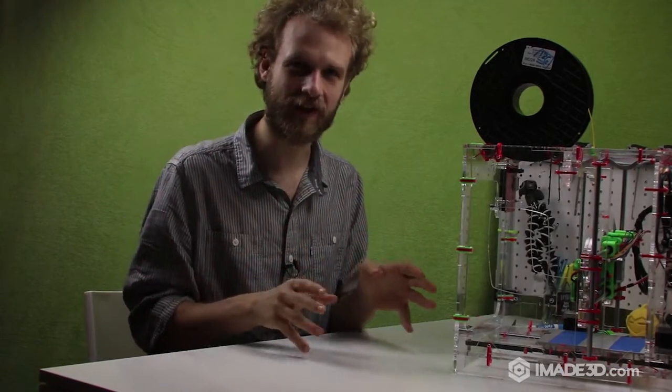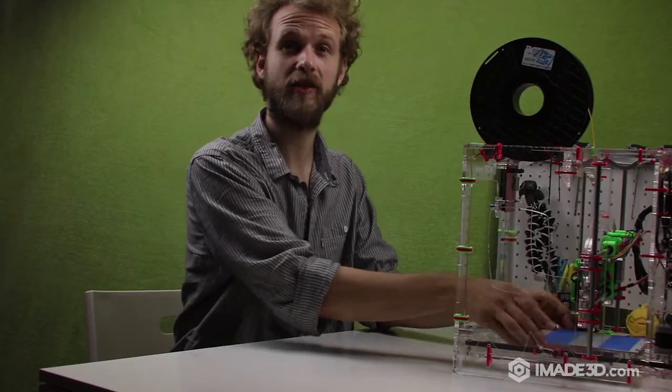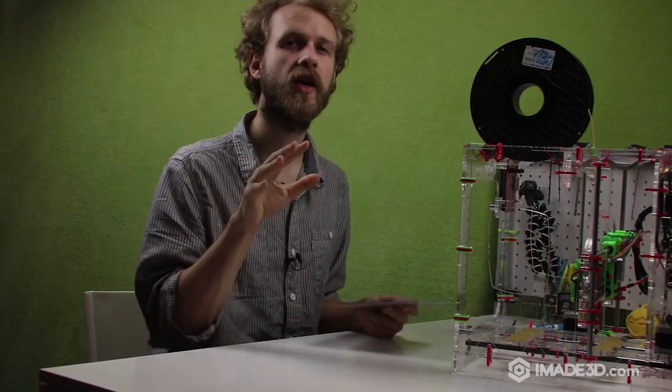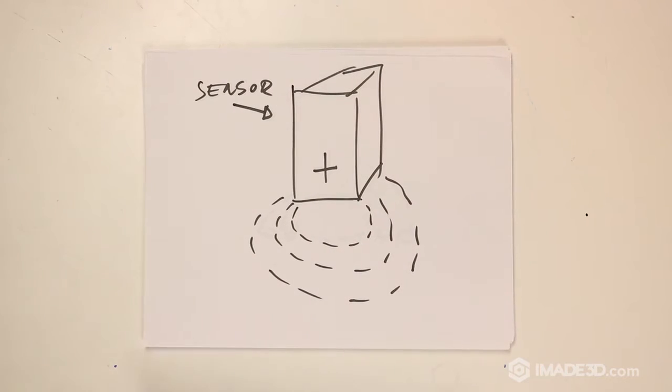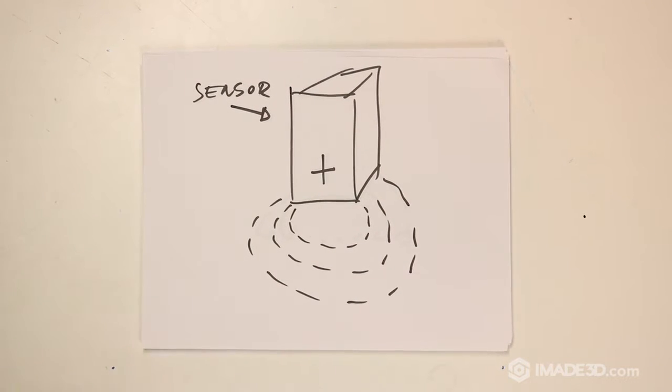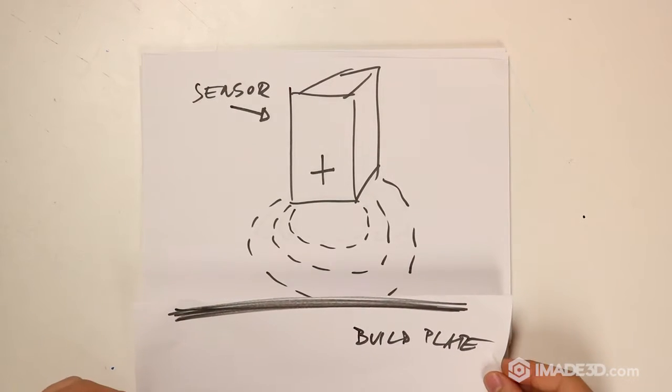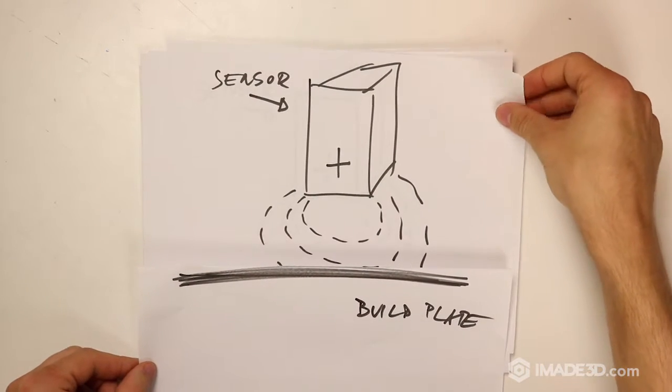Inductive proximity sensors specifically can sense metal—in our case, the aluminum build plate. They generate an electromagnetic field, and when this field collides with ferromagnetic metal like the bed, or a knife, or a pin, the sensor takes notice.